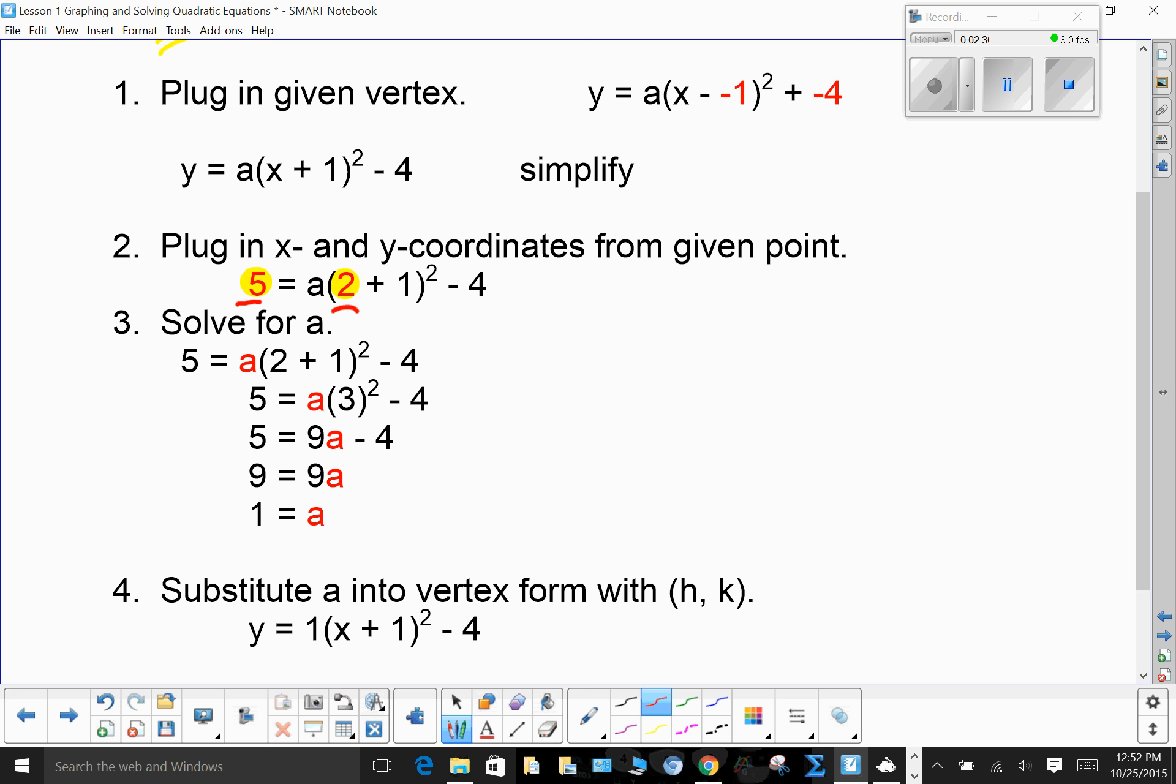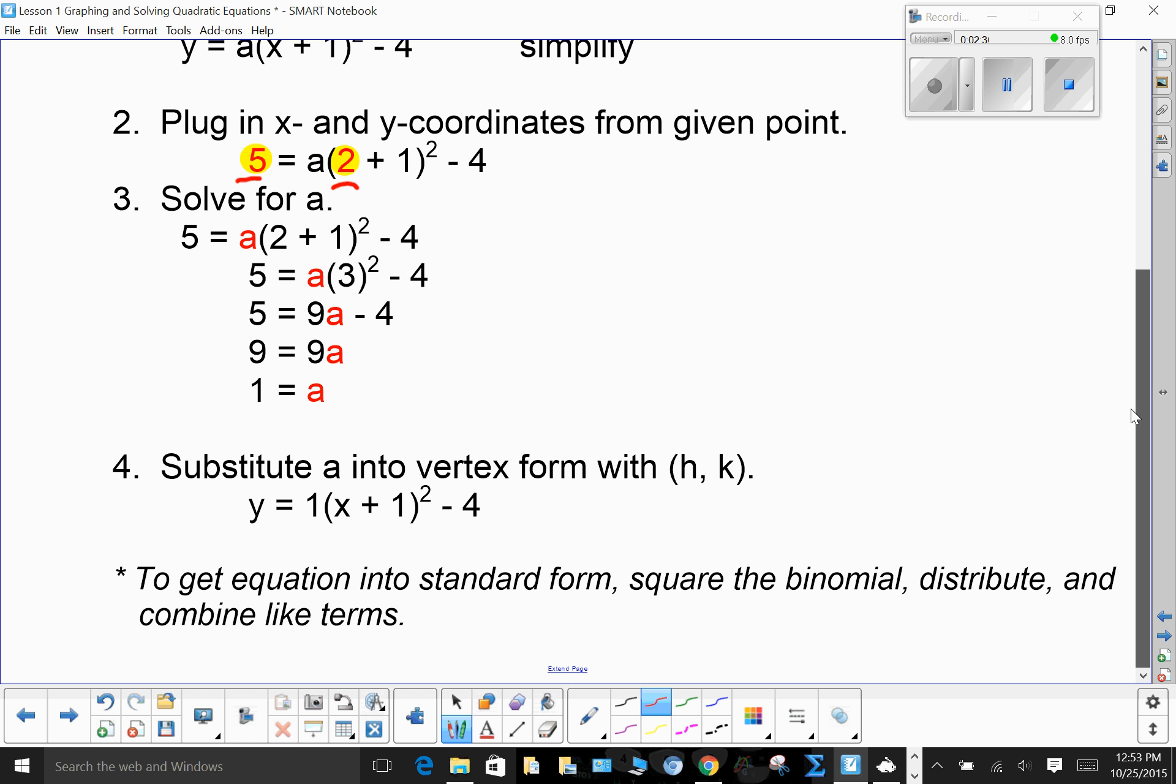So now we substitute back in our h, our k, and our a value. In this particular case, we don't actually have to use the 1. If I were going to write this equation, I would simply write y = (x + 1)² - 4. Remember that if I wanted to graph this, I would go left 1, down 4. Then I would use my 1, 1, 2, 4 pattern.